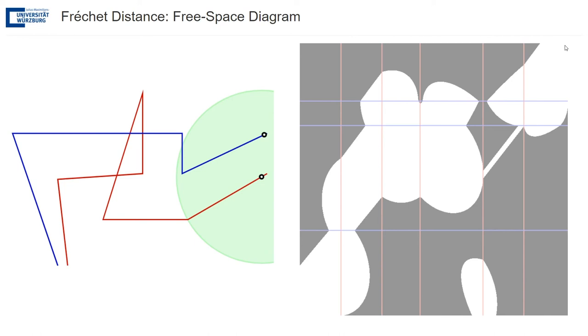So for this value of epsilon indicated by the green circle we can see in the free space diagram that this is a yes instance there is a monotone path in both directions that gets me from the bottom left corner to the top right corner and this is a little bit tricky because this can get super tiny thin so this epsilon if I could use my mouse a little bit more precisely I could go precisely through here.